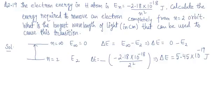Now in the second part it is asked, what is the longest wavelength of light that can be used to cause this transition? So again, delta E equal to hc by lambda. So lambda will be hc upon delta E.